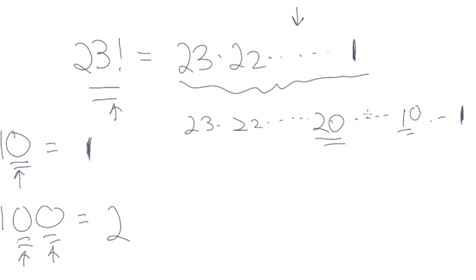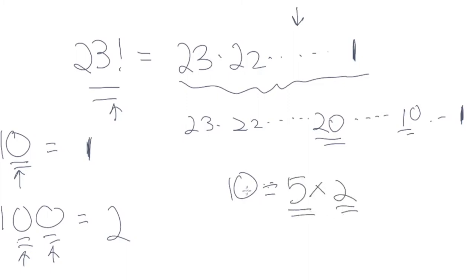Now, how do we find factors of 10 efficiently? A factor of 10 is 5 times 2. So if a number is divisible by both 5 and 2, it's divisible by 10. That means we need to find numbers that are divisible by 5 and divisible by 2.